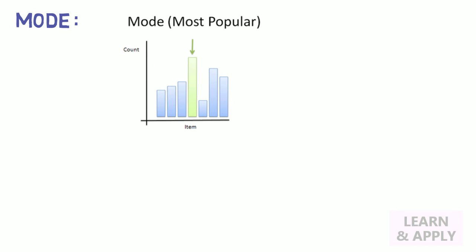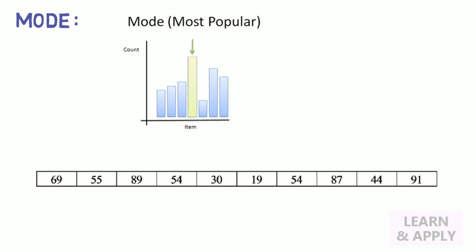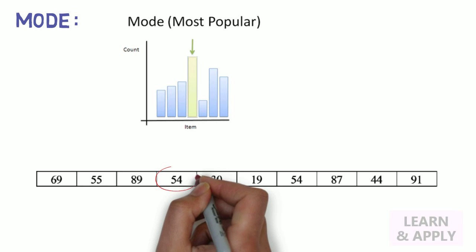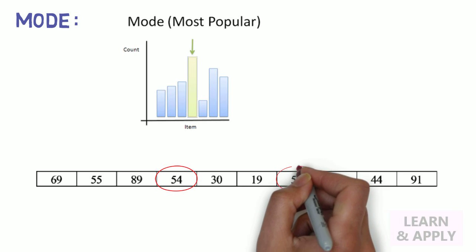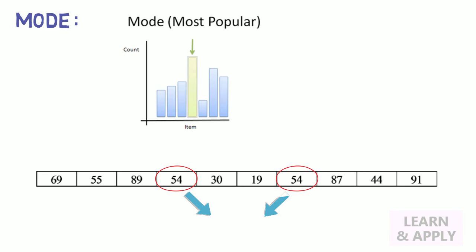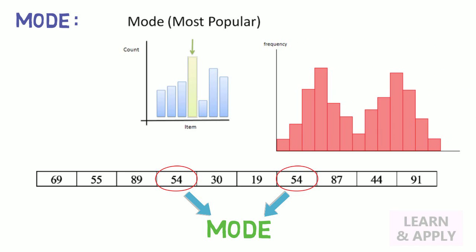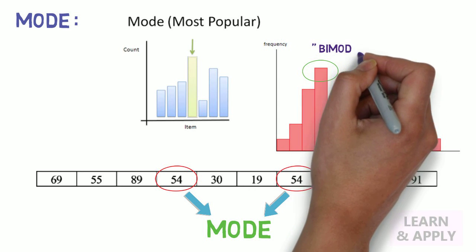Mode: The mode is the most frequent score in our data set. If we draw a histogram or bar chart of the data, it represents the highest bar in the histogram or bar chart. Let's continue with the same example of 10 data points to find the mode. Here, we can see, 54 is a score repeated twice, whereas all other scores occurred at once. Therefore, 54 is a mode in this example. Data can have more than one data point, which is repeated. If there are two modes in the data, it is called as bimodal data.